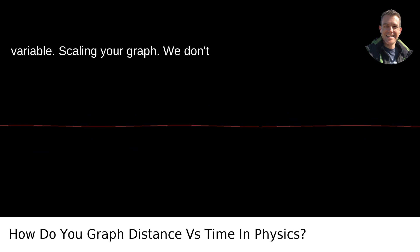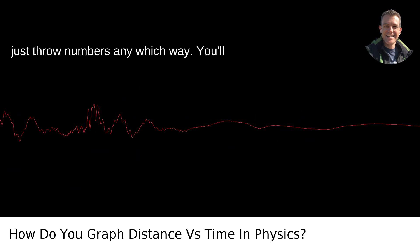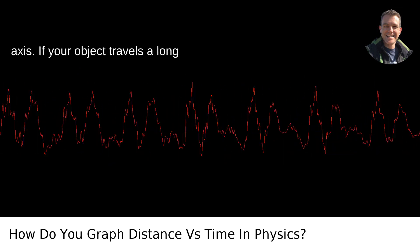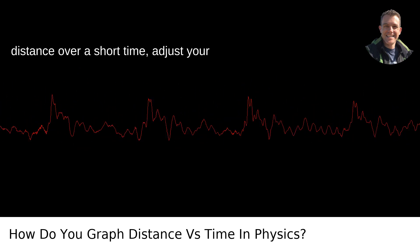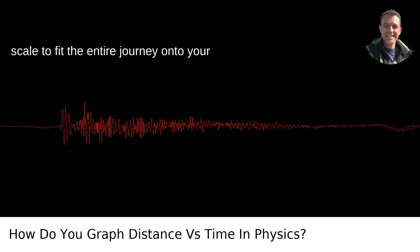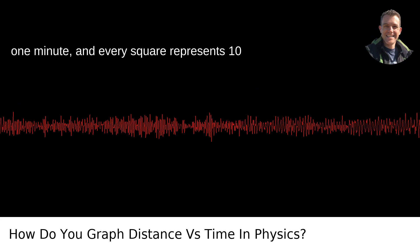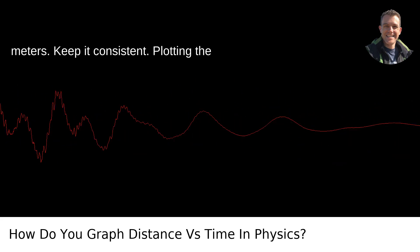Scaling your graph: We don't just throw numbers any which way. You'll want to set a sensible scale for each axis. If your object travels a long distance over a short time, adjust your scale to fit the entire journey onto your graph. Maybe every centimeter represents one minute, and every square represents 10 meters. Keep it consistent.